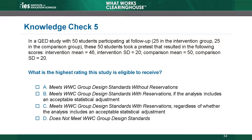Knowledge Check 5. In a QED study with 50 students participating at follow-up — 25 in the intervention group, 25 in the comparison group — these 50 students took a pre-test that resulted in the following scores. The intervention mean was 46, with a standard deviation of 20. The comparison mean was 50, with a standard deviation of 20.